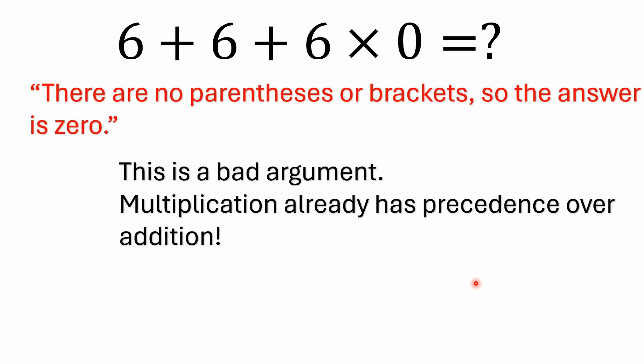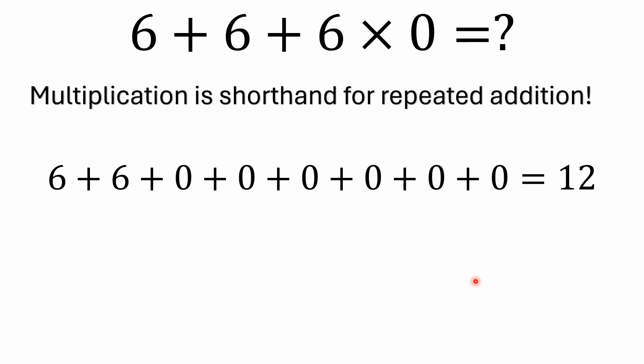One of the biggest bad arguments I get is: there are no parentheses or brackets, so the answer is 0 — you just go left to right: 6 plus 6 plus 6 is 18, 18 times 0 is 0. That's a terrible argument. Multiplication already has precedence over addition. Keep drilling this in your mind: multiplication is just shorthand for repeated addition.